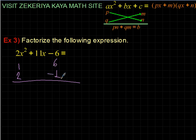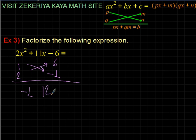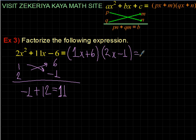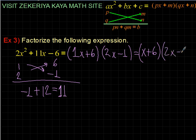Let's swap the positions. One times minus one is minus one, two times six is twelve; twelve minus one is eleven — it works! So one times minus one is minus one and two times six is twelve; positive twelve minus one gives eleven. These are the numbers to use. When I write the factorized form I write them directly: (1x + 6)(2x − 1). Canceling the coefficient of 1, this simplifies to (x + 6)(2x − 1).